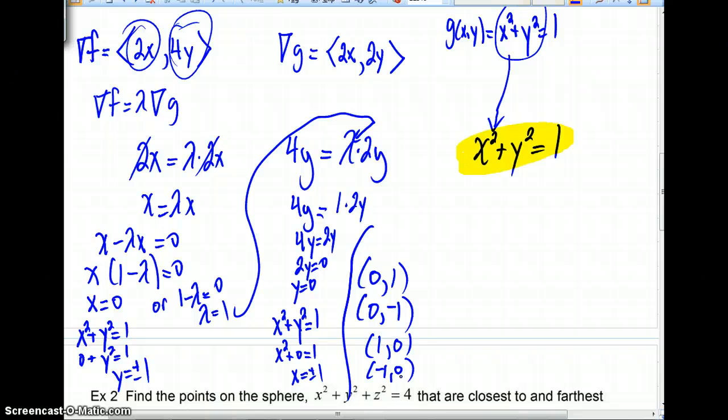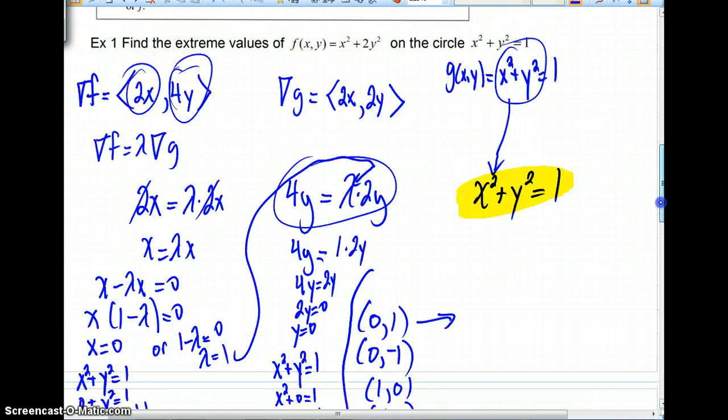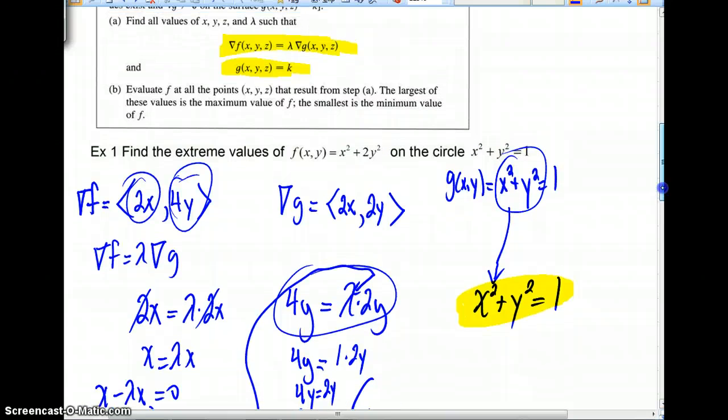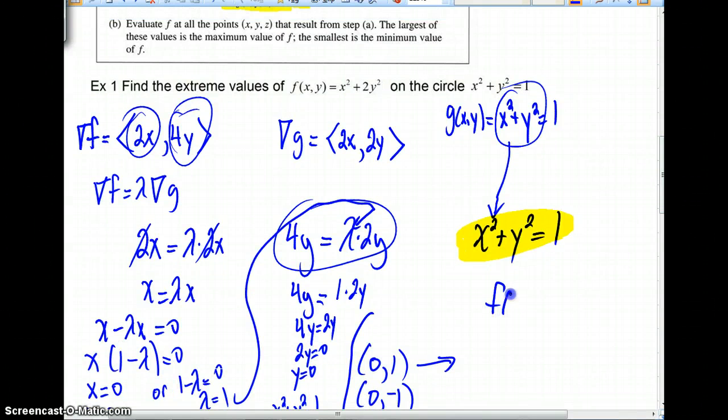I hope you can see that we could have solved this equation starting off with y just as well, but we would eventually arrive at these four critical numbers regardless. Okay, so what we have is optimizing f. If we were to optimize f, f is x squared plus 2y squared. So, we just have to substitute these values in.